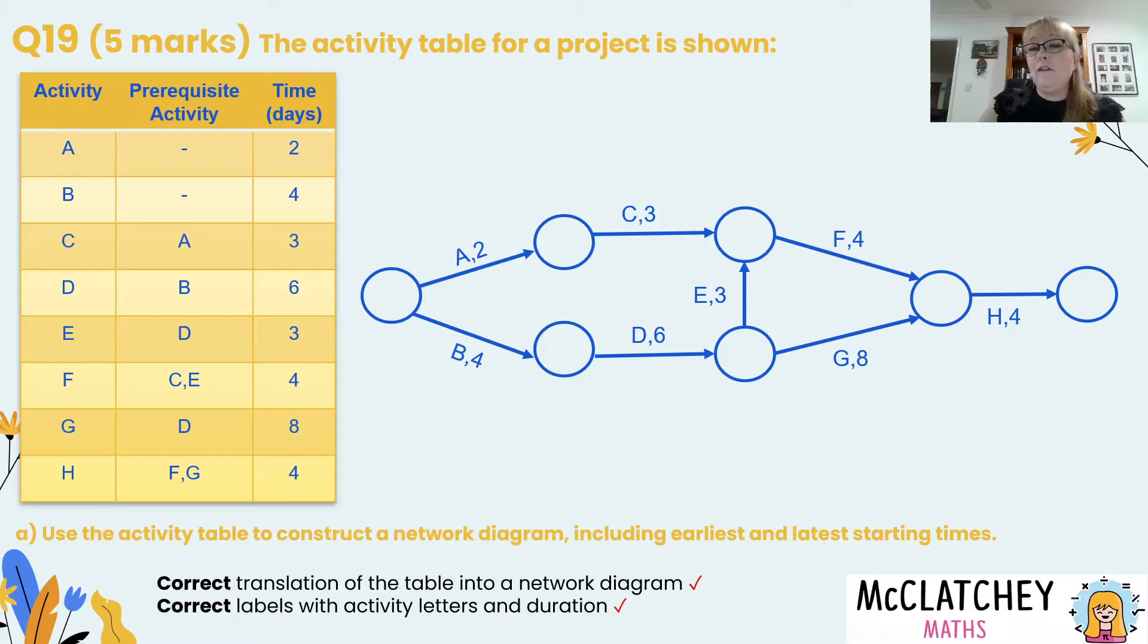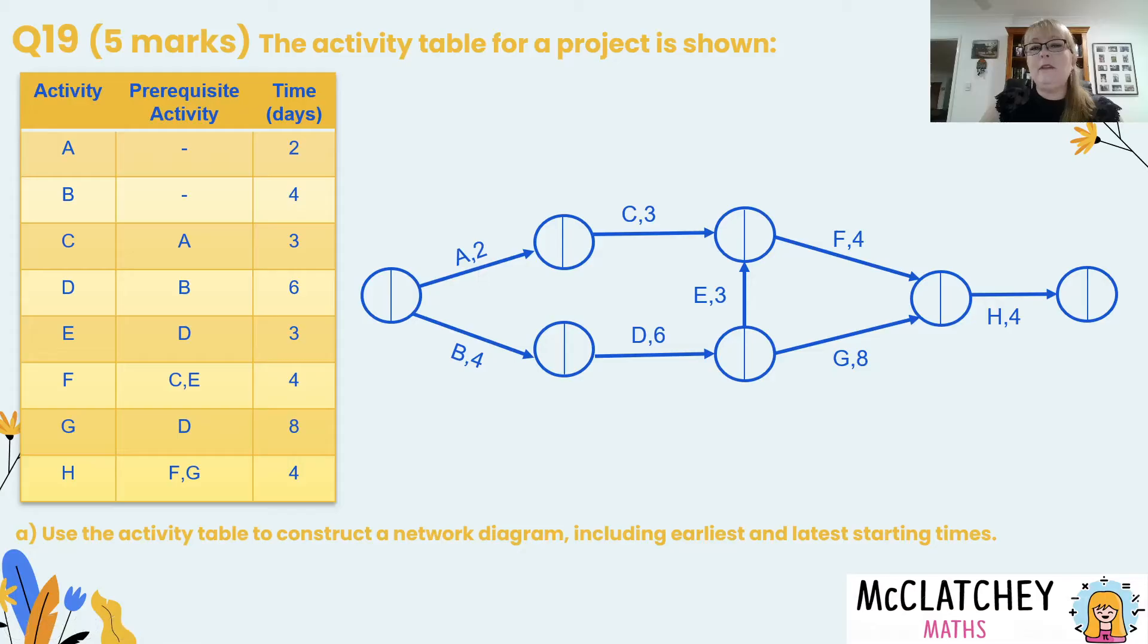Now we're going to also get another mark here for these labels so it's important that we make sure we've got the activity letter and the duration. If you'd left the duration off you wouldn't have achieved that mark and you need that duration to forward and backward scan through your network so it's important to write that. A lot of people make the mistake of drawing the activity and the duration in the vertex. Remember with these kinds of diagrams it's always drawn on the edge.